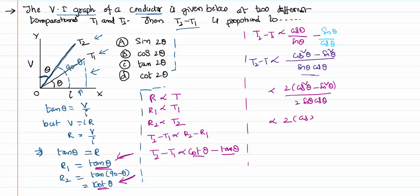And 2 sin θ cos θ is nothing but equal to sin 2θ. So what we can say further is this is directly proportional to cos 2θ by sin 2θ, that is nothing but equal to cot 2θ.